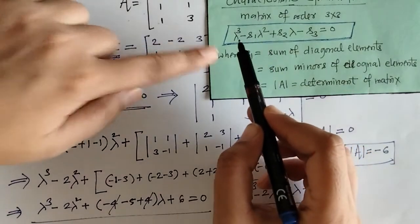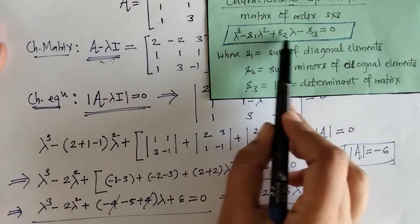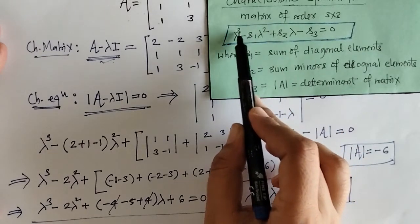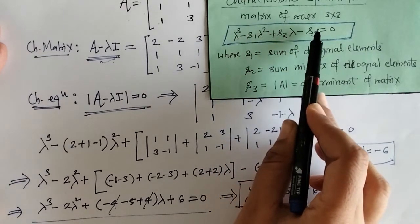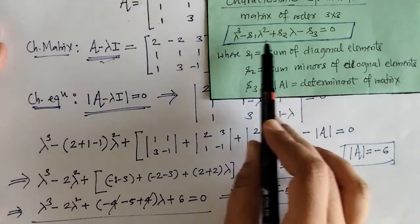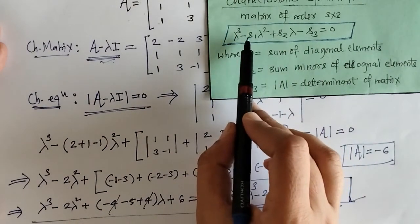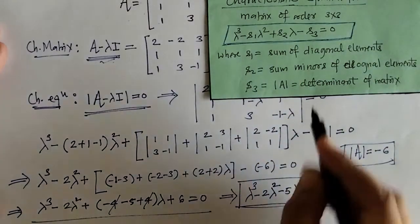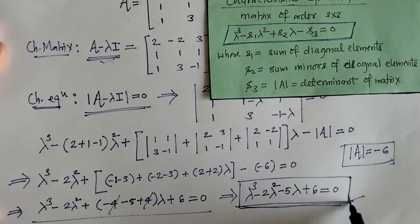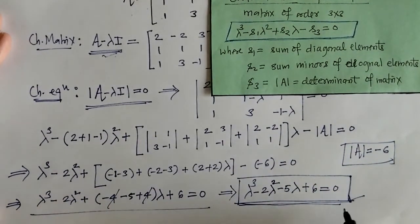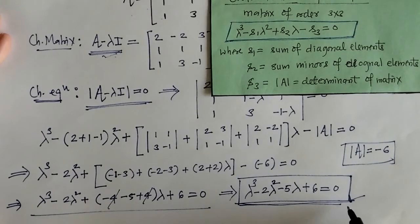We can observe that the degree of lambda is in decreasing order: lambda cubed, lambda squared, lambda, and lambda to the power zero. This is a cubic equation with alternating plus-minus signs. Using this result, we have found the characteristic equation for the given matrix.